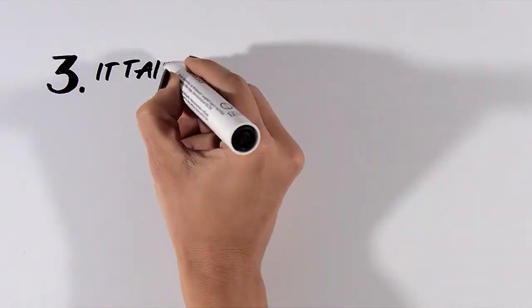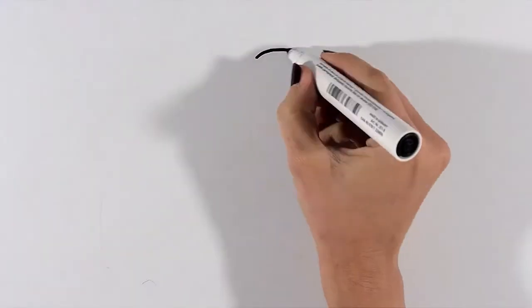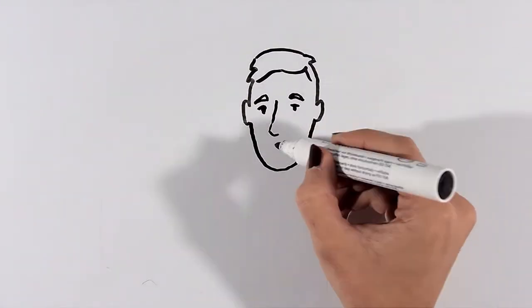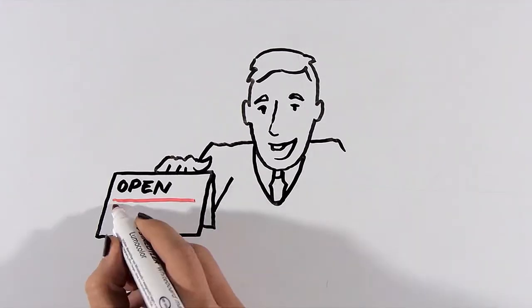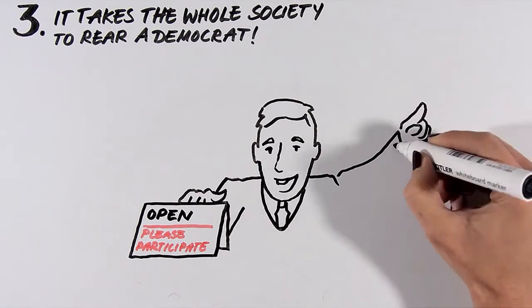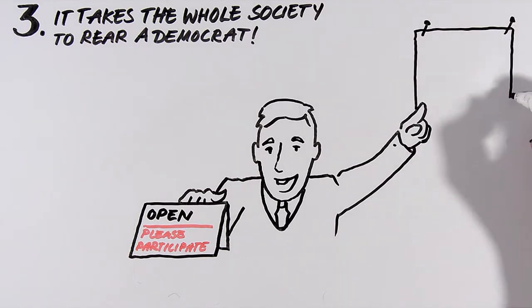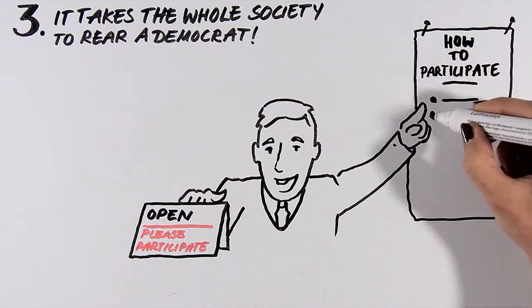Three. It takes a whole society to rear a democrat. The administration should communicate clearly when it is possible or not possible for young people to get involved in participation processes. Decision makers should outline clear conditions and procedures for participation processes and require them to be transparent and accountable.